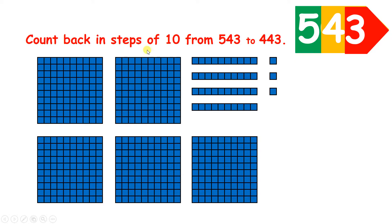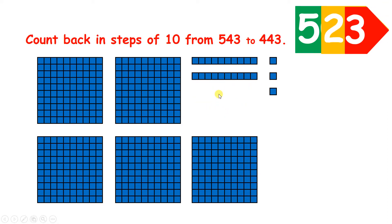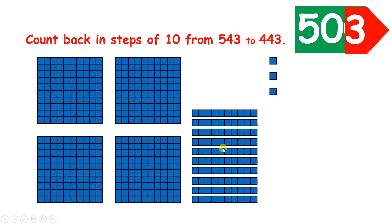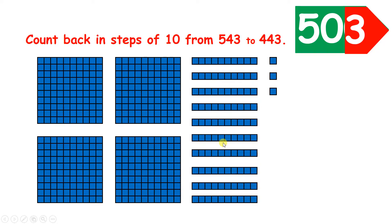Now let's count back in steps of ten. Five hundred and thirty-three. Five hundred and twenty-three. Five hundred and thirteen. Five hundred and three. And now we can regroup one of our hundreds into ten tens, and carry on counting back in tens.